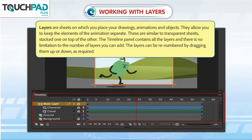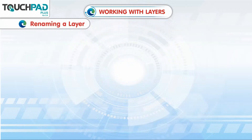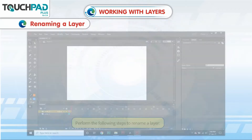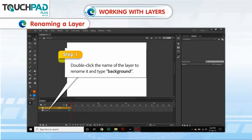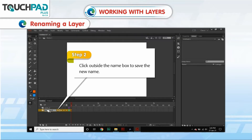The layers can be reordered by dragging them up or down as required. Renaming a Layer: Perform the following steps to rename a layer. Step 1: Double-click the name of the layer to rename it and type Background. Step 2: Click outside the name box to save the new name.